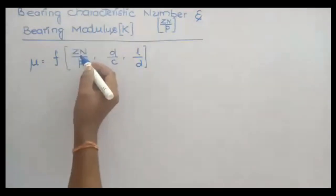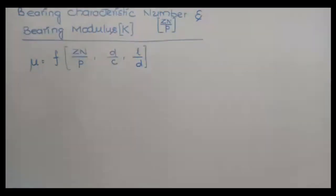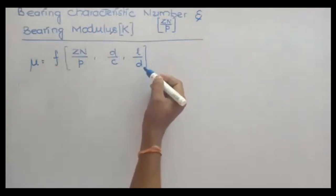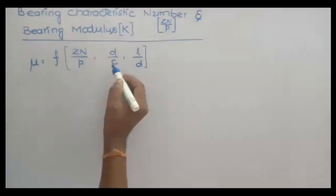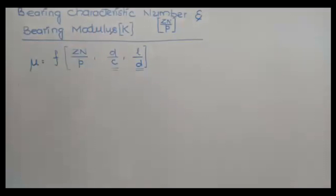Here, z is the viscosity of lubricating oil, n is the speed of the journal, p is the bearing pressure calculated based on the projected area of the bearing, c is the diametral clearance, d is the diameter of the journal, and l is the length of the bearing. d/c is the inverse of the diametral clearance ratio, and l/d is the ratio used to differentiate bearings into long, short, or square bearings. These values can be taken from the data book.